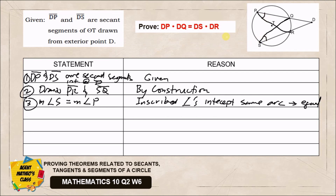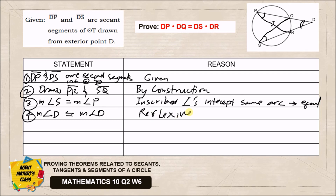We can also say that the measure of angle D is equal to itself, because we notice that the two possible triangles overlap with respect to angle D, which is outside our circle. The reason here is the Reflexive Property — a certain expression is equal to itself. We use this when a certain side or angle overlaps between two figures.